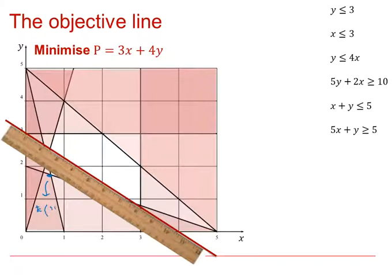Which was 15 over 23, 40 over 23. So we know that the minimum p is at that point.